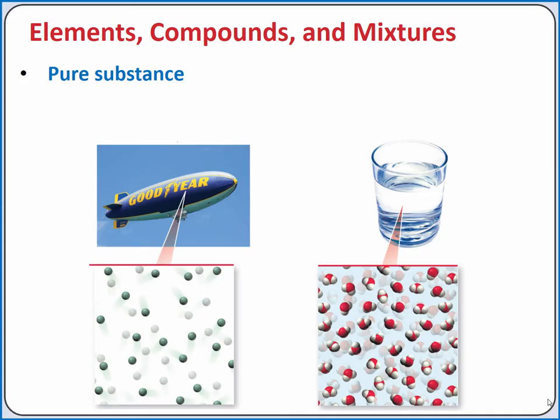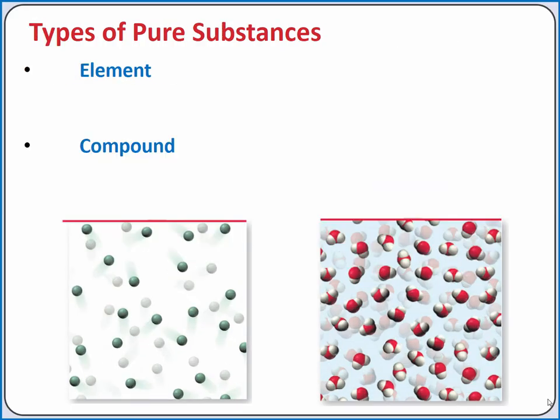Pure substances are composed of only one type of particle. For example, if the Goodyear blimp is filled with helium gas — helium exists as a single atom, one type of particle; it's a noble gas — helium gas is just composed of helium atoms. Water is also a pure substance, made up of water molecules, which are all the same type of particle. Pure substances can be further classified as either element or compound. Helium is an element — elements are the simplest building block chemically for matter — whereas water is a compound, and compounds contain two or more different elements.